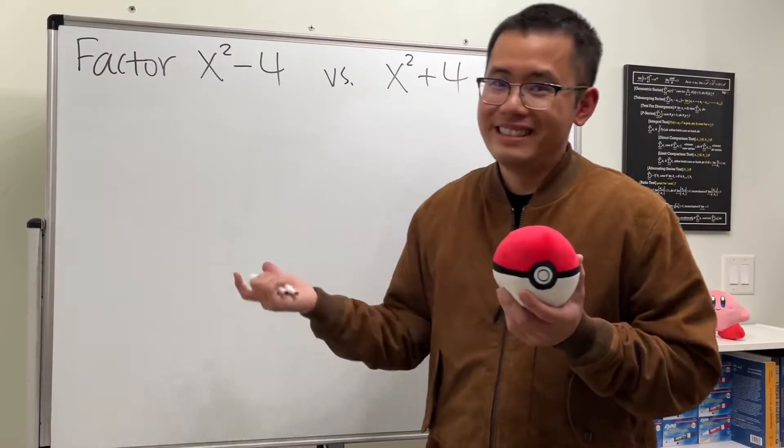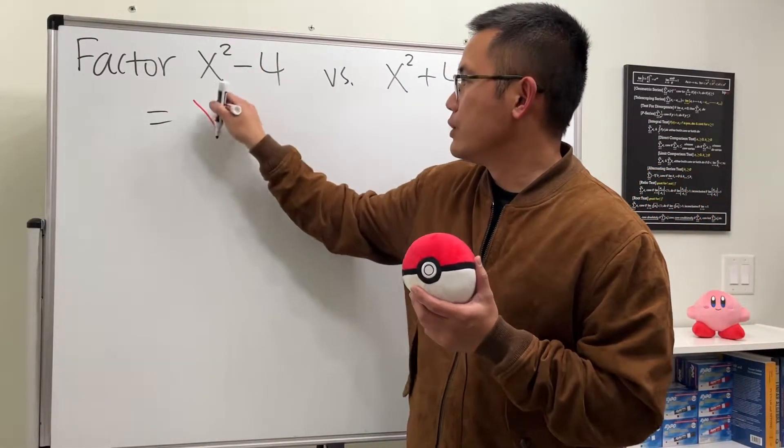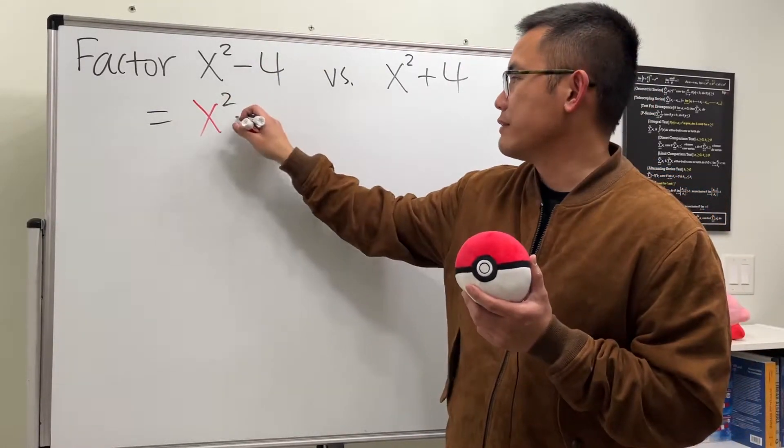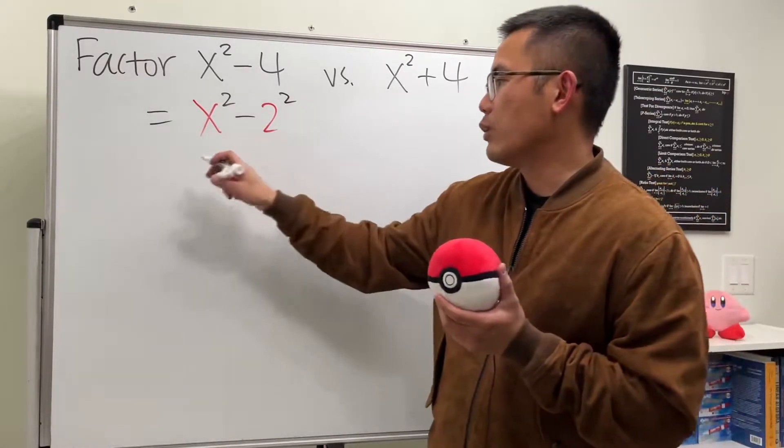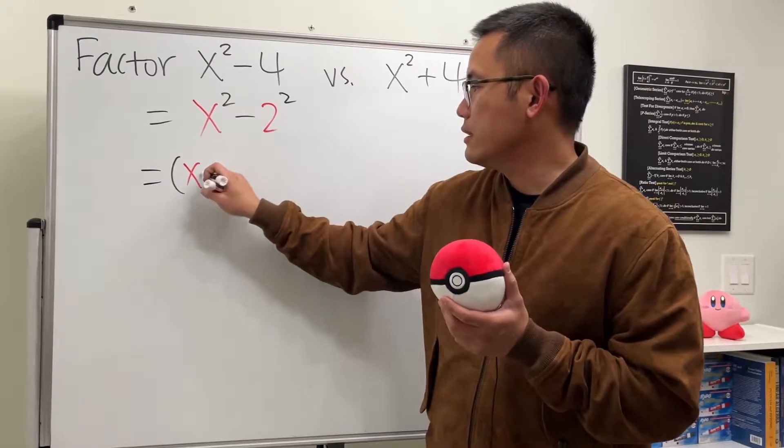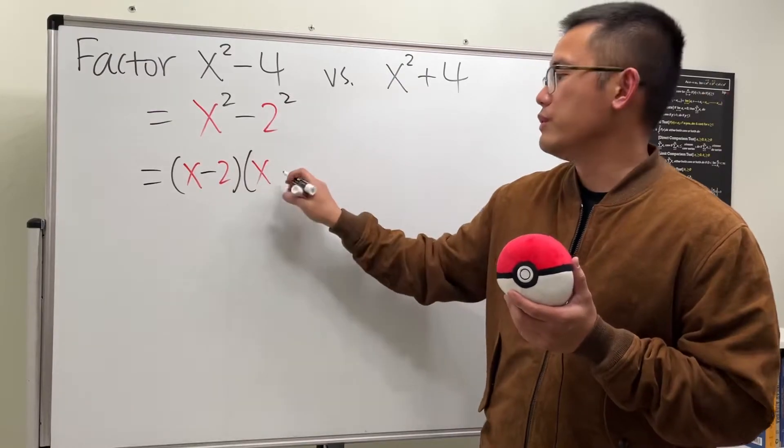For the first one, we notice this is just a difference of two squares, because here we have x squared, and then the 4 is the same as 2 squared. So we just have minus 2 squared. And of course, we can use the formula, and that will give us this minus that as the first factor. So we have x minus 2, and then we multiply by x plus 2 for the second factor.